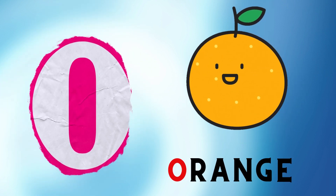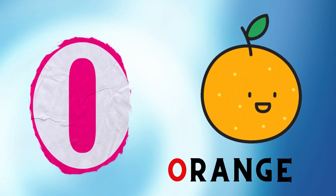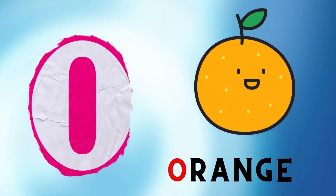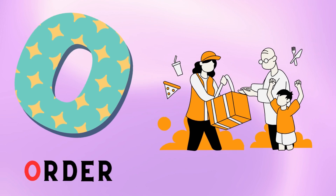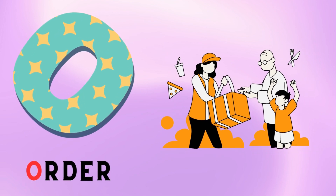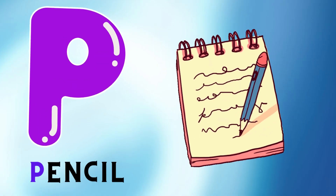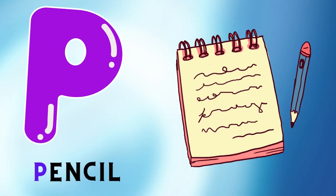O is for Orange. O. Orange. O is for Otter. O. Otter. P is for Pencil.